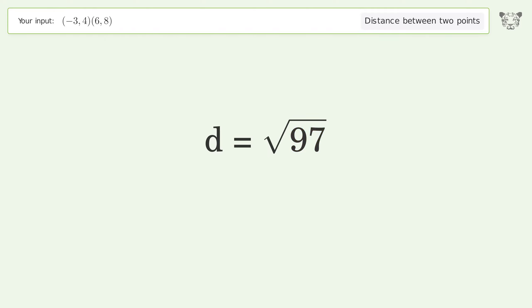And so the distance between the two points is the square root of 97, or 9.849.